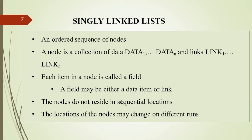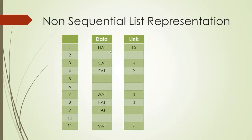Each item in the node is called a field; a field may be either a data field or a link field. The nodes do not reside in sequential locations, and the locations of the nodes may change on different runs. In this non-sequential list representation, we have one data field and one link field. For example, the first element 'bat' stores a link; the second element 'cat' is stored at location 3.